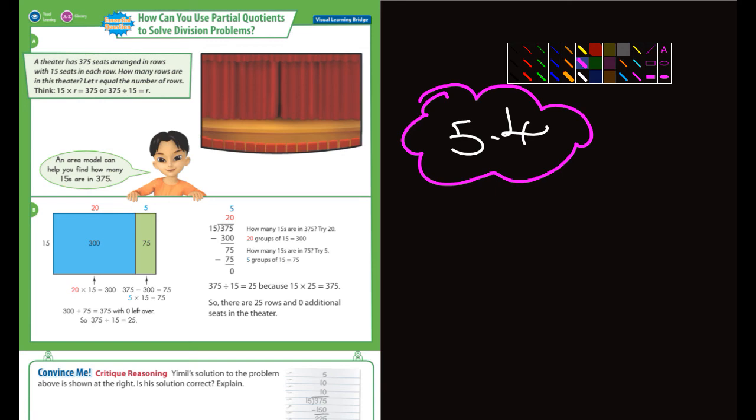In this one here, they're talking about theaters. It says a theater has 375 seats arranged in rows of 15. How many rows are there? Well, you can think about it as 15 times R equals 375, or basically 375 divided by 15.